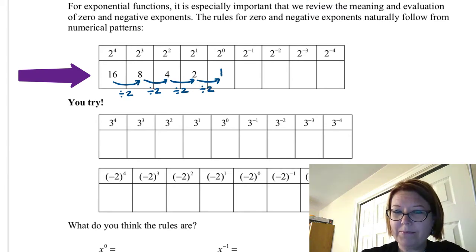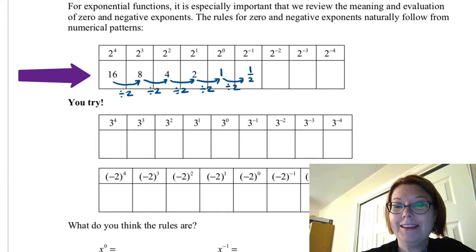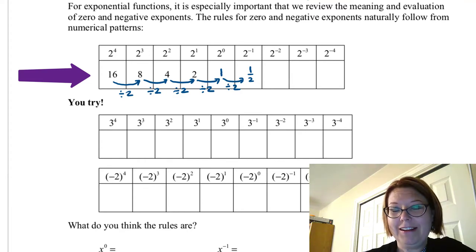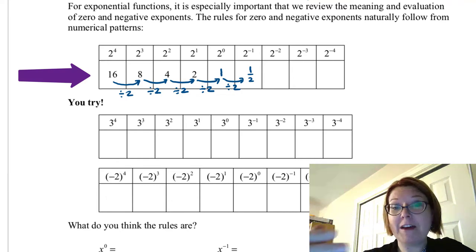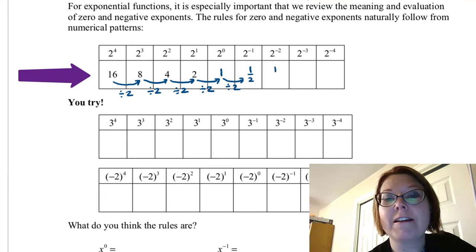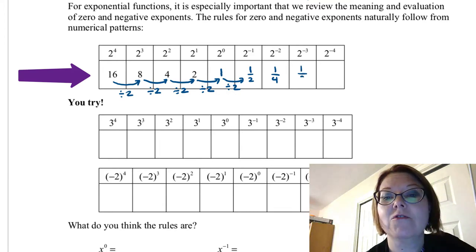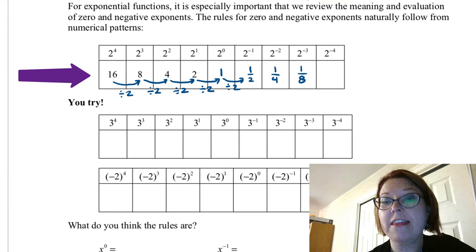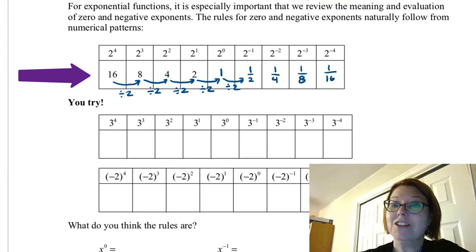To get two to the zero, we take 2 and divide by 2, giving us 2 over 2, which is 1. Continuing that pattern: 1 divided by 2 is one half, one half divided by 2 is a quarter — like half a pie divided by two gives a quarter — then a quarter divided by 2 gives one eighth. So two to the negative third is one eighth, and two to the negative fourth is one sixteenth.